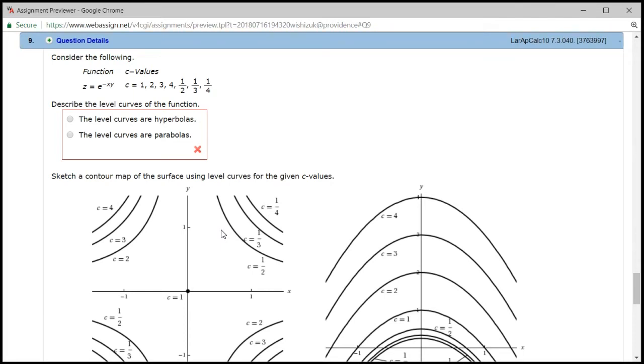Let's look at homework 7.3, problem number 9. We have a function of two variables, z equals e to the negative x times y. And we want to find the level curves for c equals 1, 2, 3, 4, 1 half, 1 third, and 1 quarter.